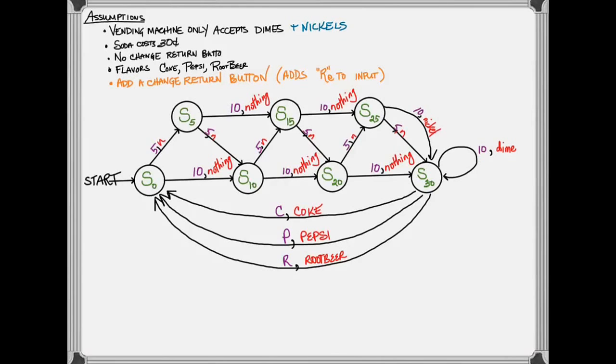This is going to change the possible inputs in your finite state machine. My problem is that I used R to represent root beer as an input, so I can't use R to represent return as an input. I'm going to represent it using RE.